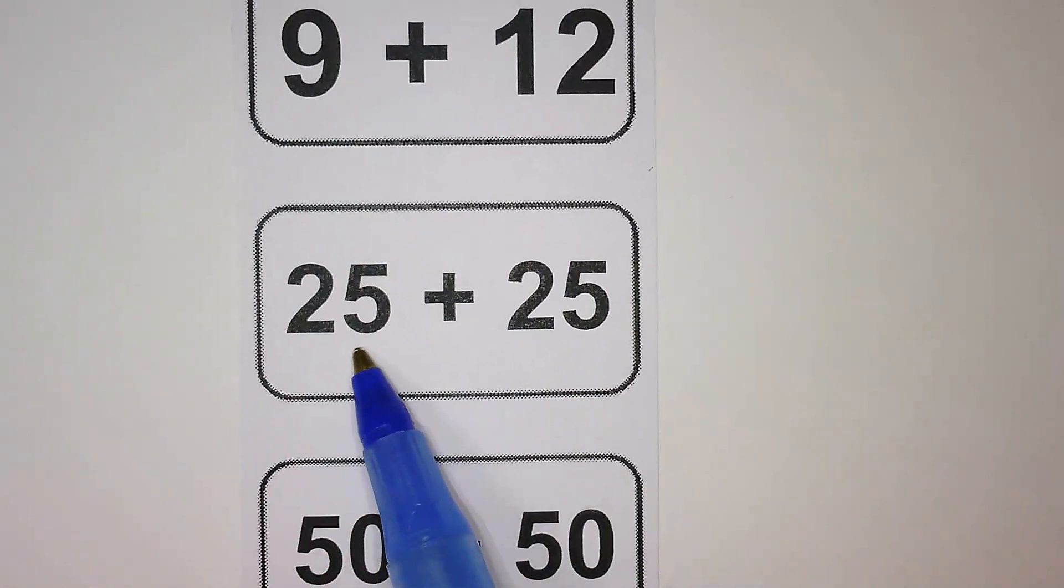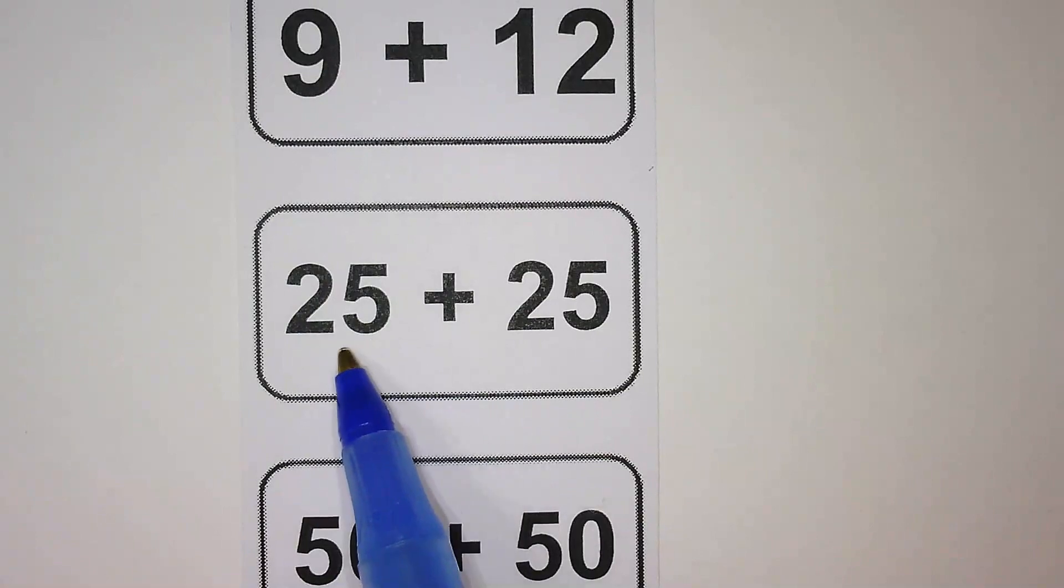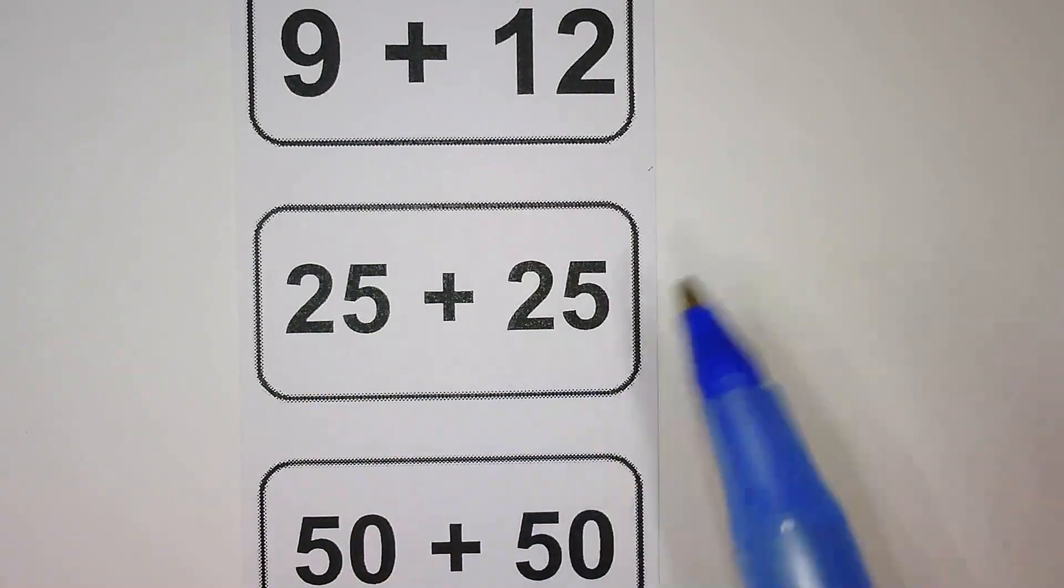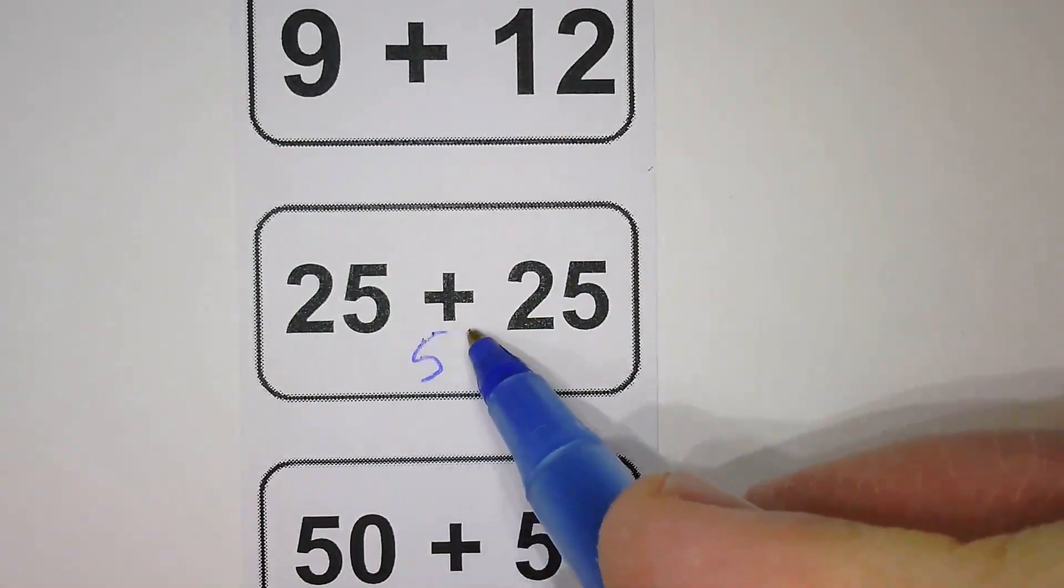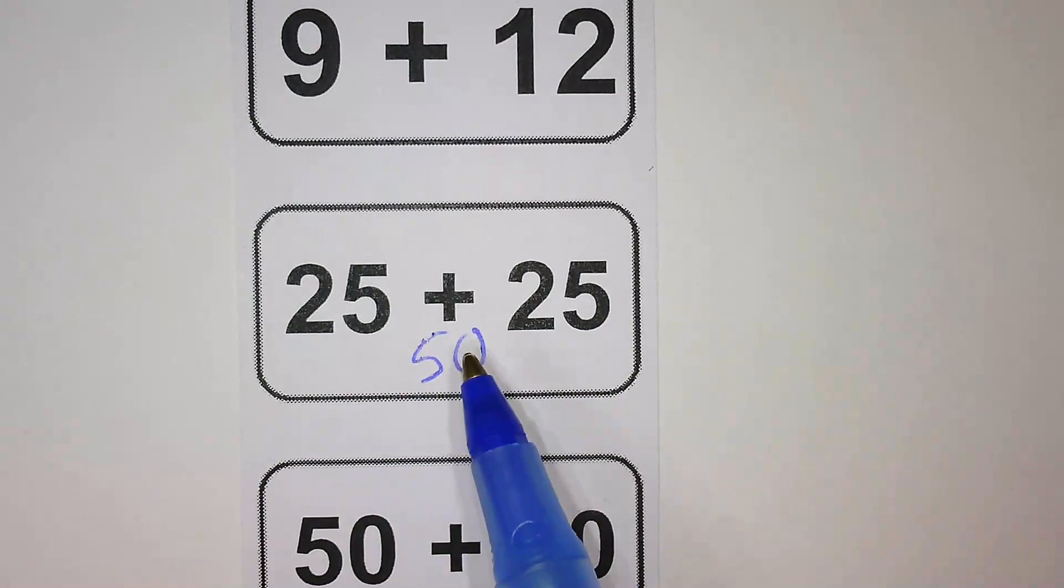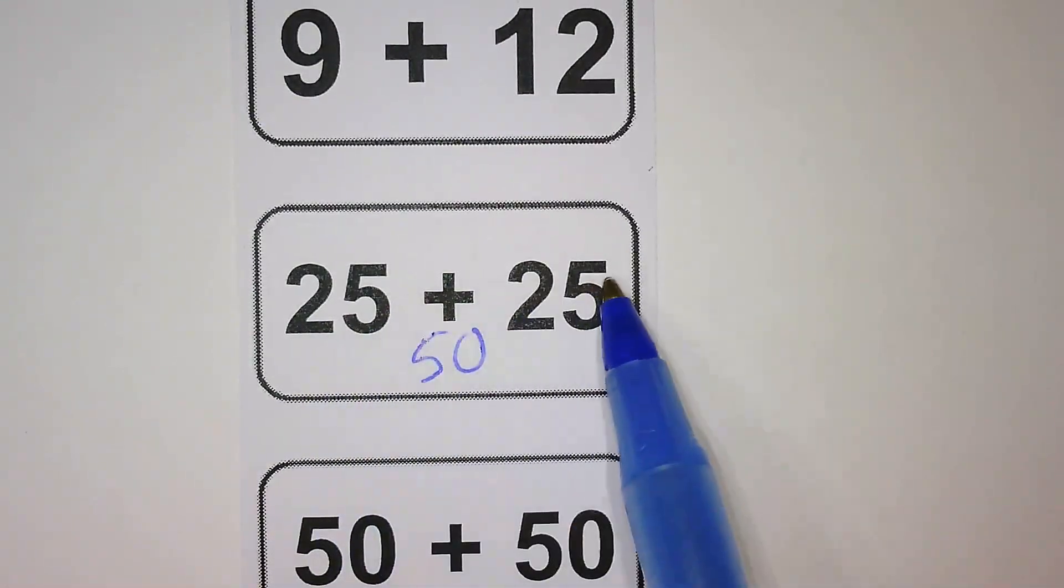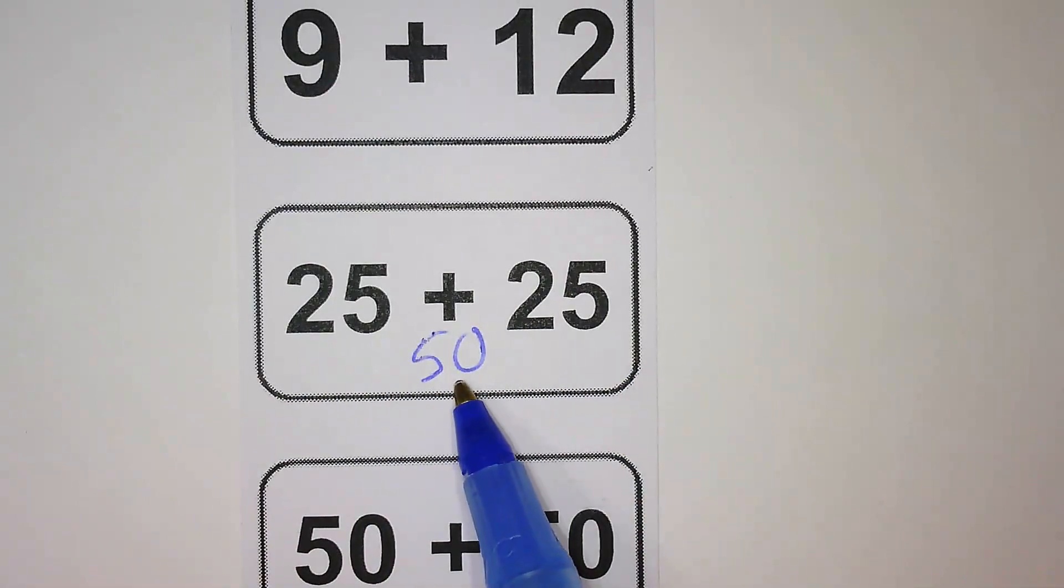It's a big one, so when I see 25s I think of quarters like money. So if I have two quarters, 25 cents plus 25 cents, I get 50 cents, 50. So when you see 25, think like quarters, think like money. Two quarters equals 50 cents.